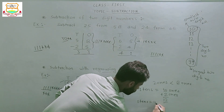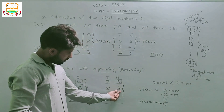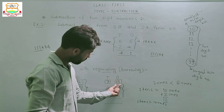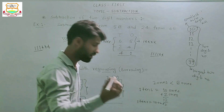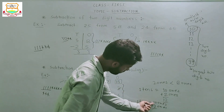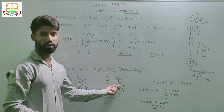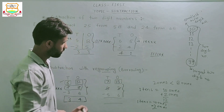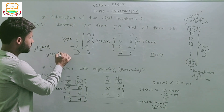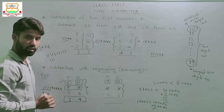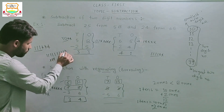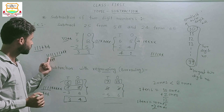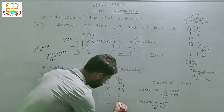1 ten equals 10 ones. When we take 1 ten from the tens column and write it in the ones column, its value equals 10 ones. We already have 3 ones, so 10 ones plus 3 ones equals 13 ones. Now subtract 6 from 13: draw 13 sticks, cut 6 — 1 through 6. How many remaining? Count: 1, 2, 3, 4, 5, 6 and 7. Means 13 minus 6 equals 7.